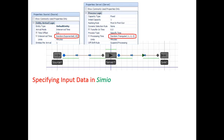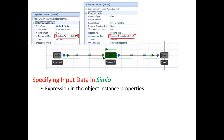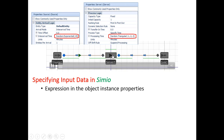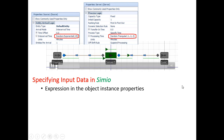In Simeo there are multiple ways of specifying input data. The first and perhaps the most common way is by putting an expression directly in the object instance properties. For instance, in this single server model, I have random arrivals and my inter-arrival times are exponentially distributed with a mean of 0.25 minutes. Similarly for my server I have random.triangular 0.1, 0.2, 0.3 minutes for processing times.